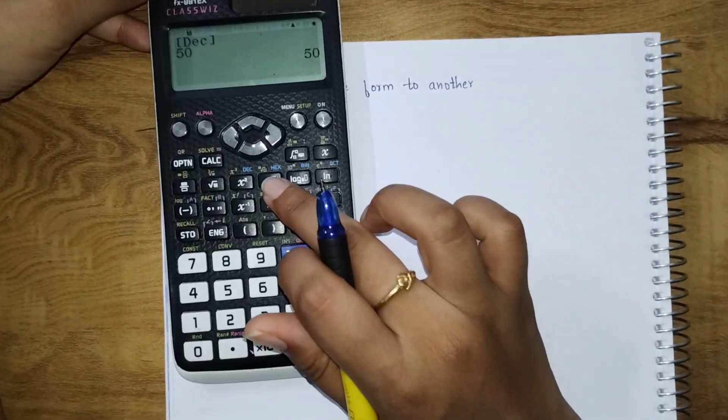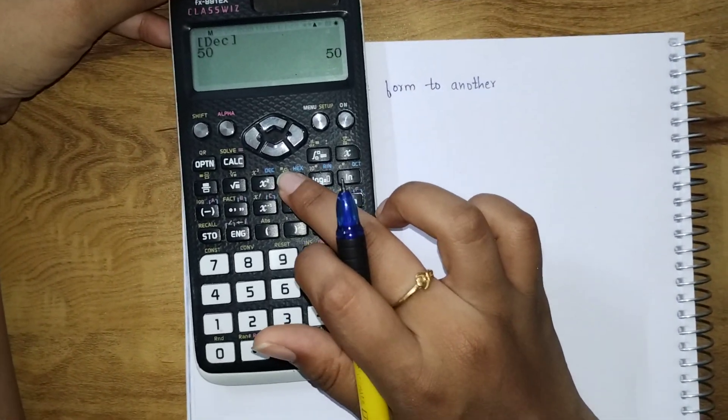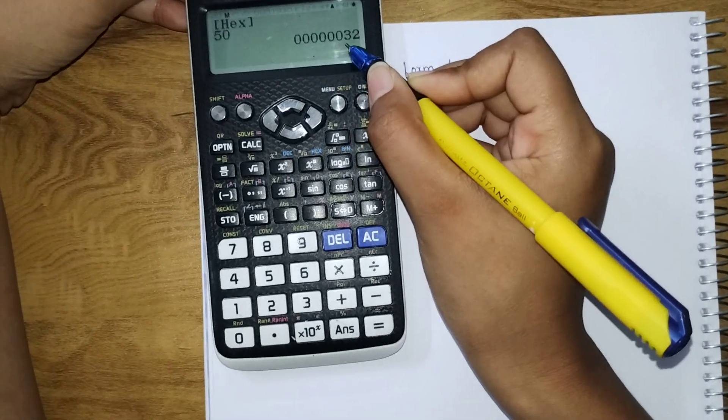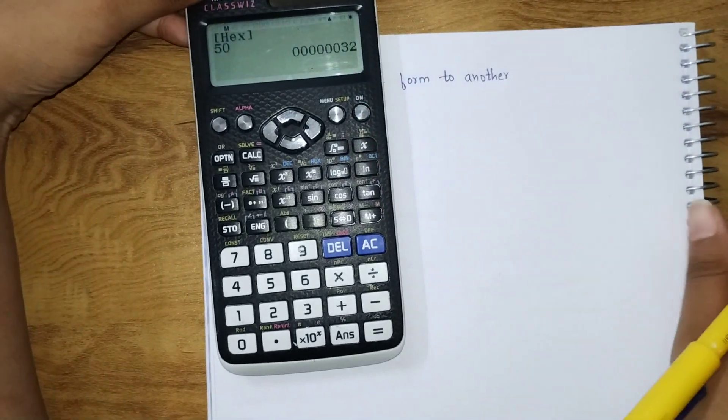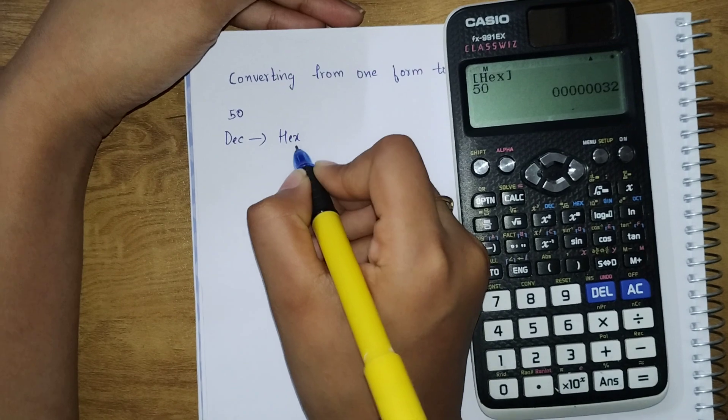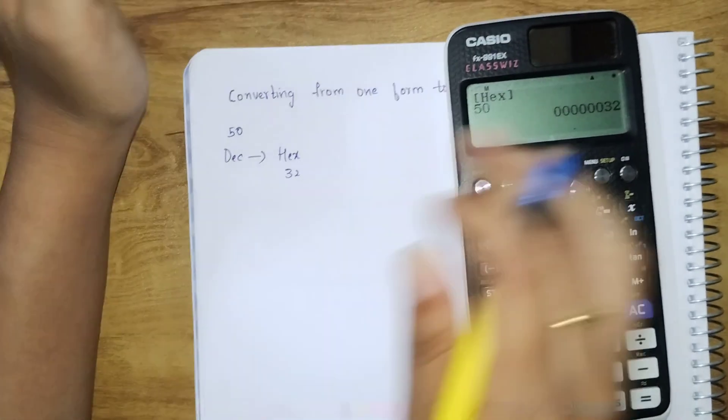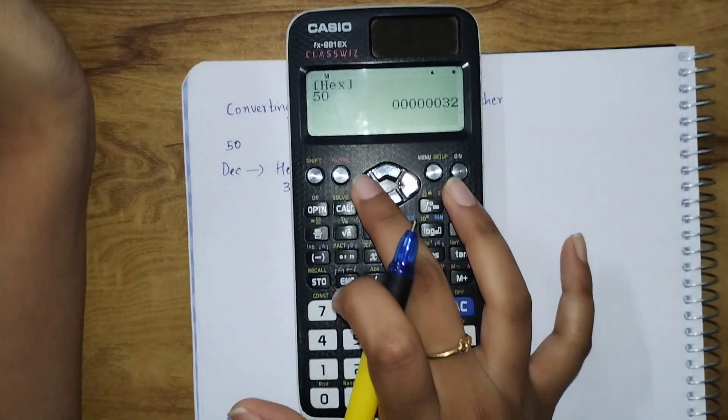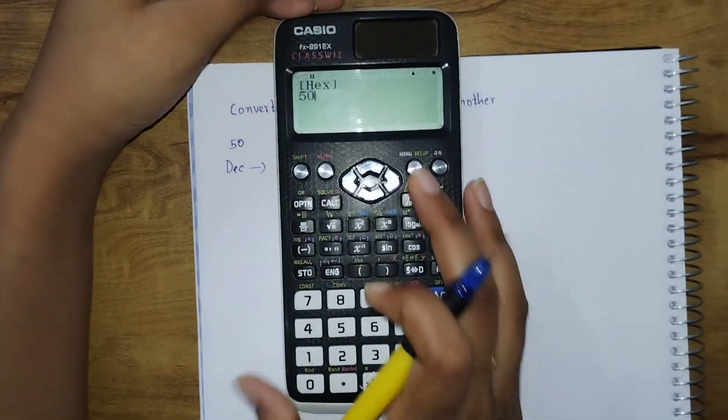Click on this option here, hex. See, it got converted into hexadecimal, that is 32. Hexadecimal of 50 is 32. Now go back, click on this.